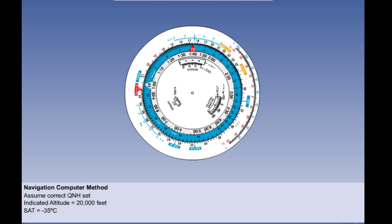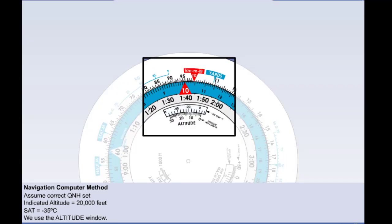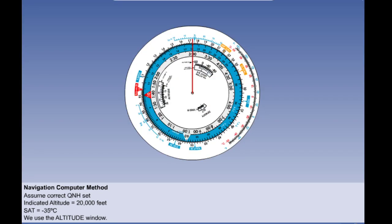Now let's look at the navigation computer method. For this one, you don't need to work out the ISA deviation. You enter the computer with the static air temperature at your indicated altitude. We carry out the calculation using the altitude window. In the altitude window, align 20,000 feet with the static air temperature of minus 35. There is only one place where this can happen, so by doing this you have set up a particular relationship between the inner and the outer scales. The outer scale now shows the true altitude corresponding to the indicated altitude on the inner scale. Against 20,000 feet indicated on the inner scale, read off 19,200 feet true altitude on the outer scale. The navigation computer will be as accurate as you need and is quicker and easier than the formula once you get used to it.